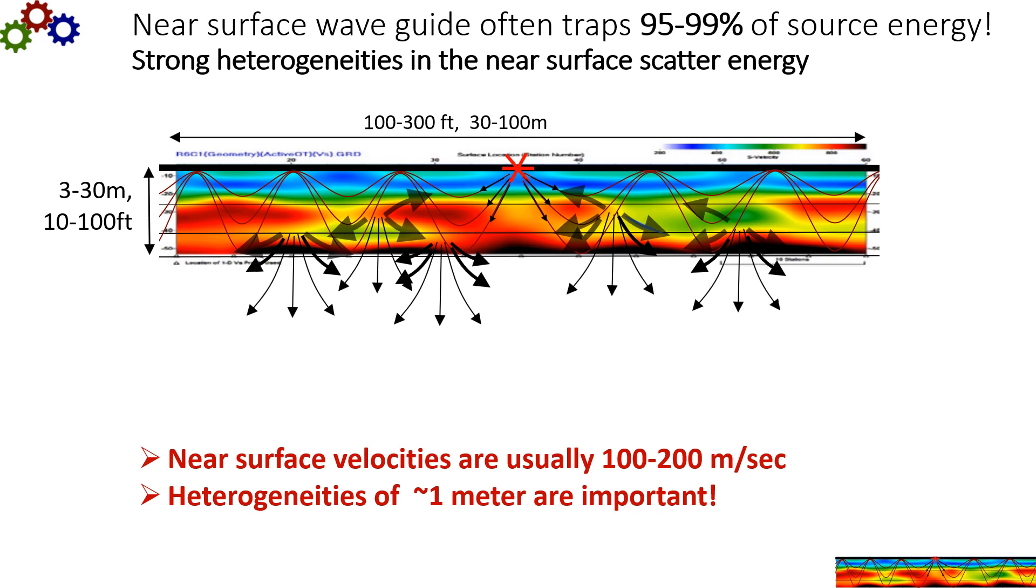Here's a diagram of the near surface scattering. And I call this micro scattering because of the small scale of the heterogeneities and the limited distance it travels. This depth here is only 3 to 30 meters and horizontally this is only 30 to 100 meters. You can see that this is very slow velocity here in the top unconsolidated. The velocities are often on the order of 100 to 200 meters per second. And what that means is that it traps a lot of the source energy.